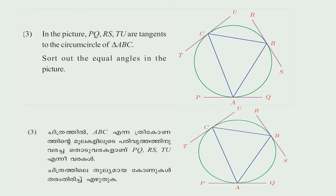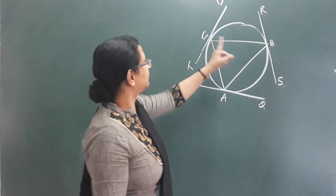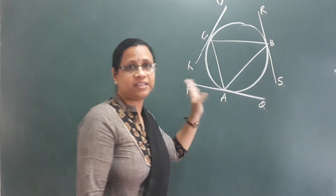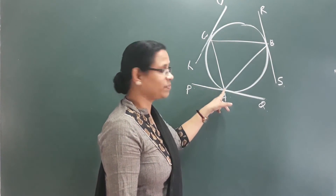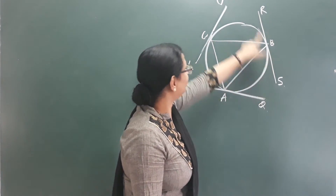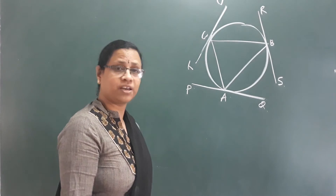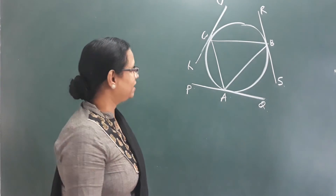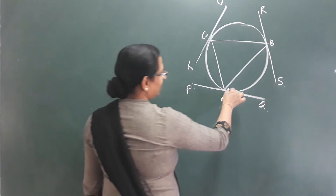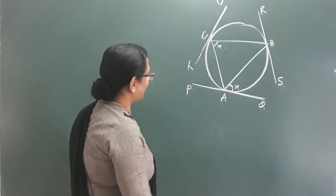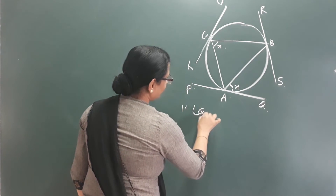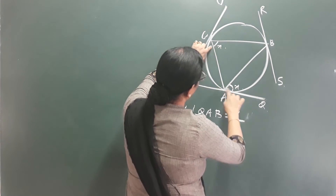Next question: In the picture, P, Q, R, S, T, U are tangents to the circumcircle of triangle ABC. Sort out the equal angles in the picture. We look at the points in the chart. The circle is inscribed in the triangle with vertices A, B, C. We call the equal angles and list the pairs. Angle QAB is equal to angle ACB.